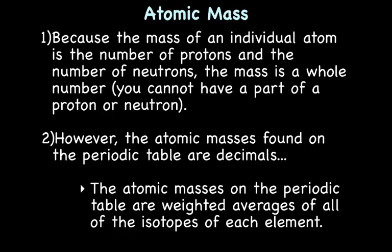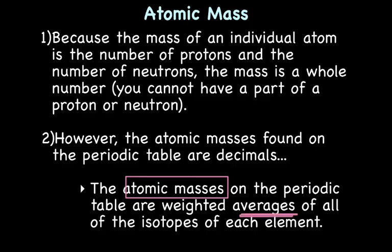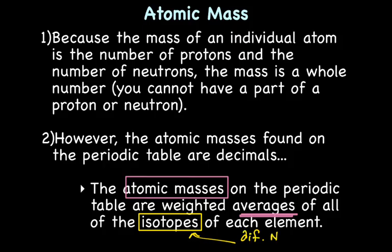The atomic masses on the periodic table are weighted averages of all the different isotopes of each element. Even though isotopes of an element have the same number of protons, they have different numbers of neutrons, which means different masses. When you average those different masses together, you end up with a decimal.